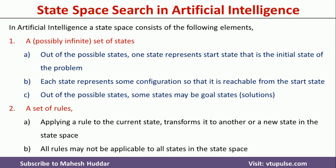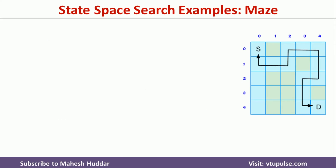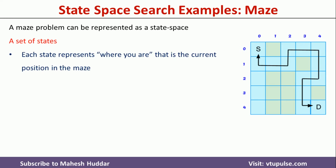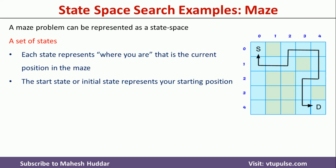Now we will take a simple example to understand how we can represent a problem using state space search. The first example is the maze problem. The maze problem can be represented as a state space. Here each state represents where you are, that is the current position in the maze. The start state represents the starting position — you can see that S is the starting position. The goal state represents the exit from the maze; in this case D is the goal state.